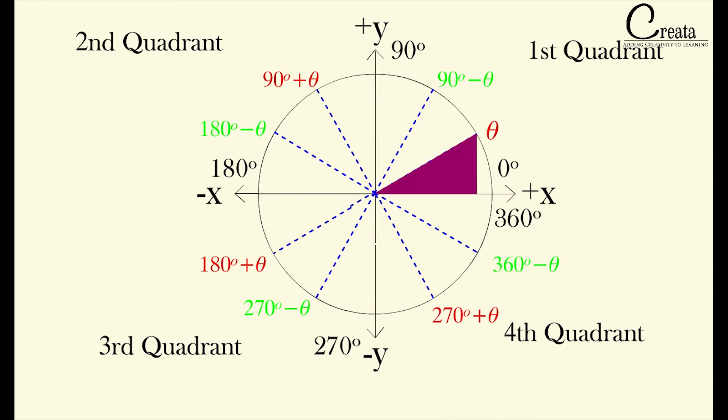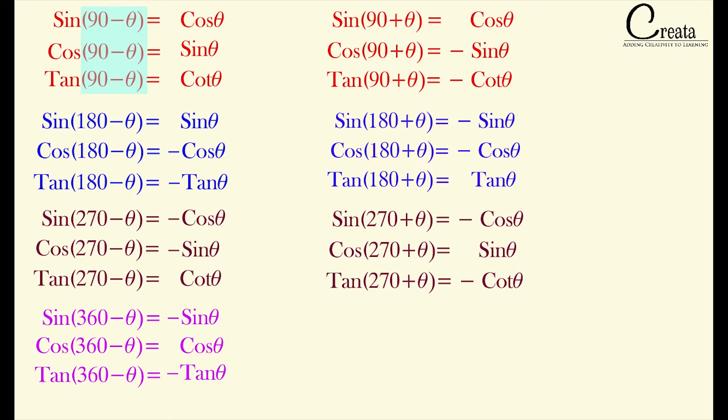We have covered the first quadrant as 90 minus theta, second quadrant as 90 plus theta and 180 minus theta, third quadrant as 180 plus theta and 270 minus theta, and the fourth quadrant as 270 plus theta and 360 minus theta. These are the four quadrants and these are the 21 formulas of trigonometric ratios in different quadrant systems.